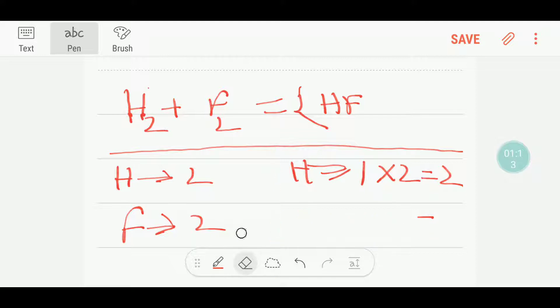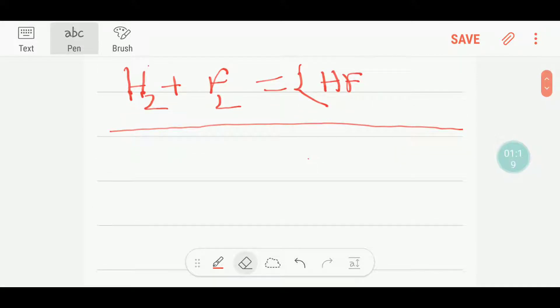How to do this, how to balance this reaction in your examination hall? You can do it by applying your common sense. This is hydrogen fluoride. You see that here we have two fluorine, so to make it two I can put here two.